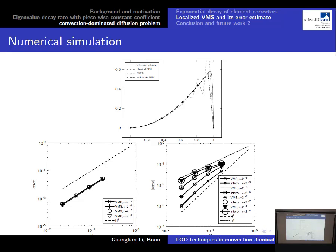I will now show three simple numerical simulation results. The solid line is the reference solution. There is the Galerkin approximation solution, the solution from SUPG, and the solution from the localized variational multiscale method. From this figure, we see that there is oscillation for the Galerkin approximation, but no oscillation for the variational multiscale method and the localized variational multiscale method. The localized variational multiscale method performed slightly better than SUPG in the sense that it has less smearing effect.